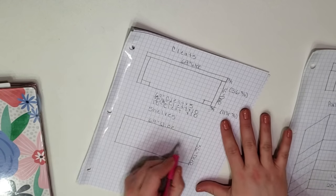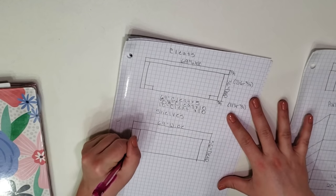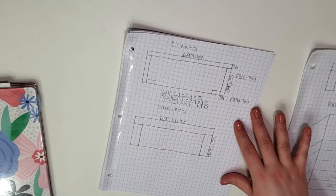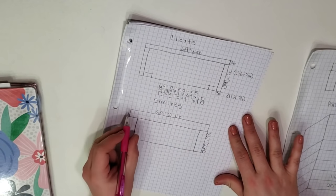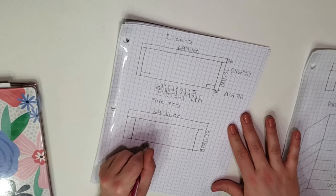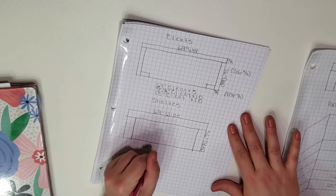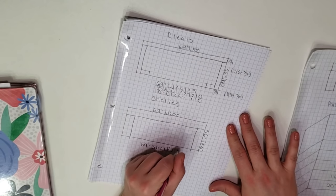Now that I have the dimensions for my cleats, I'm going to work on the dimensions for my shelves. I decided to use plywood for the shelves and I know they're going to be 11 and a quarter inches deep. Again I will need one per shelf that runs the full width of the back wall, so they will be 69 inches wide.